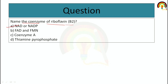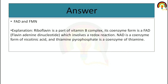The next question is: Name the coenzyme of riboflavin B2. The options are NAD, FAD and FMN, coenzyme A, and thiamine pyrophosphate. The correct answer is FAD and FMN.